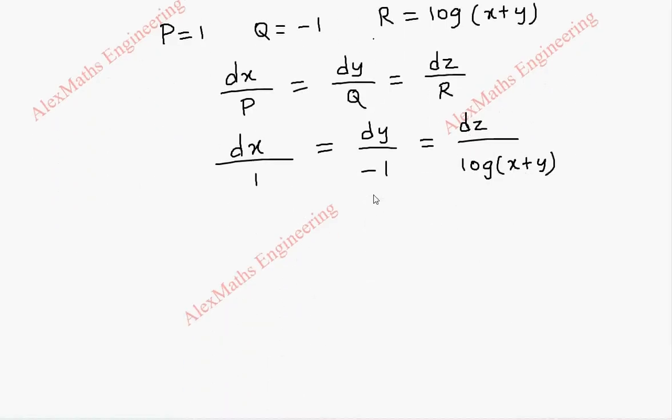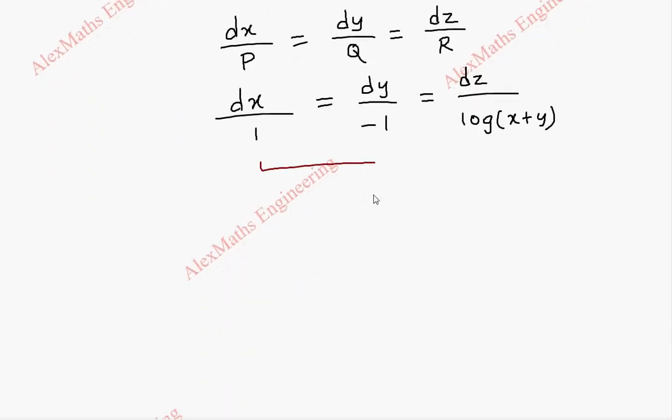Now from this we are going to take two terms at a time and we are going to integrate and get the solution. This is already in the variable separable form. We have x on one side, y on the other side. So we go for integrating on both the sides.